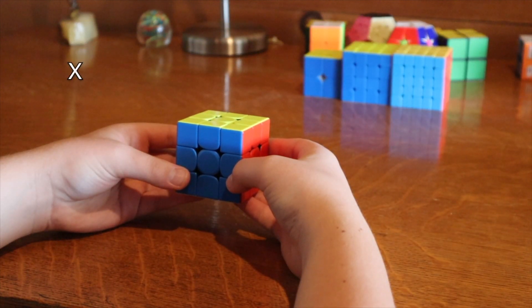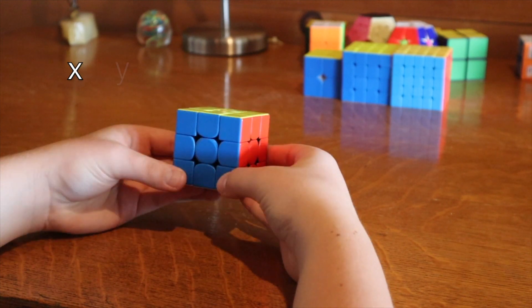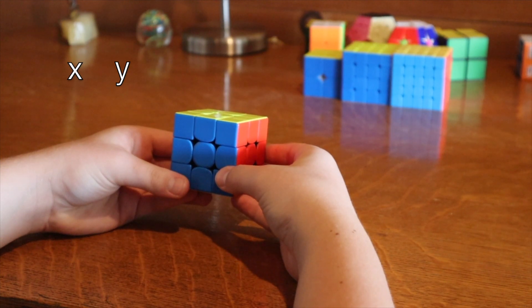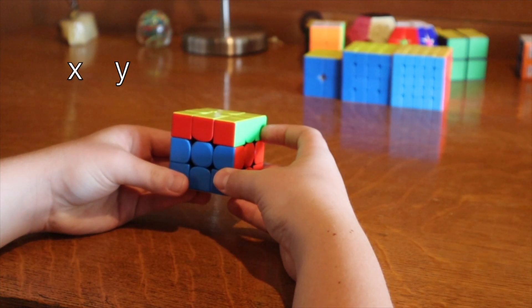X is rotating the entire cube up, like this. Y is rotating the entire cube to the side, like this. It's the same way you would do a U turn, but just the entire cube.